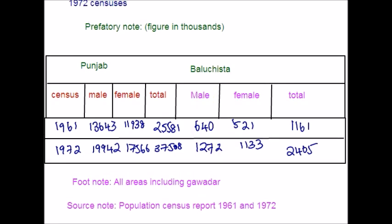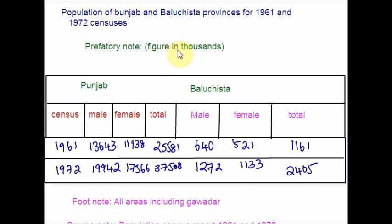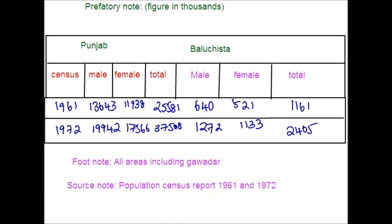This is how a statistical table will look like: a title, prefatory notes, the rows and columns, the body of the table, along with footnotes and source notes. A table should be a systematic arrangement of data into vertical columns and horizontal rows. The process of arranging data in rows and columns is called tabulation. The purpose of tabulation is to present the data in such a way that it becomes more meaningful and can be easily understood by a common man.